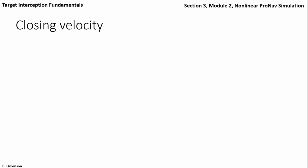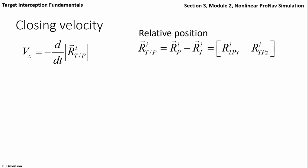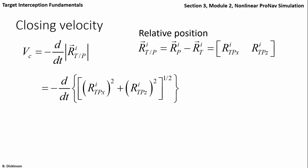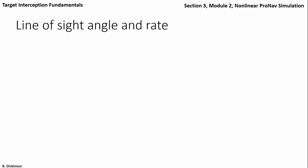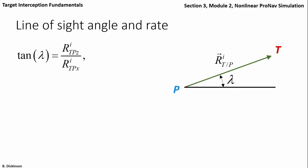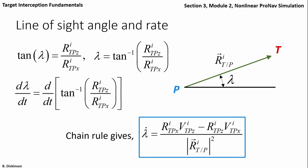From relative velocity, we can calculate closing velocity. Closing velocity is defined as minus the time rate of change of the range, where the range is the magnitude of the relative position vector with x and z components. We take the time derivative of the square root of the sum of the squares of the individual relative position components. From the chain rule, we get an expression for closing velocity that depends on the relative position and velocity vector elements. We need line-of-sight angle and line-of-sight rate. Line-of-sight angle is clearly the arctangent of the z component of the relative position over the x component. For the rate, we take the time derivative of the inverse tangent expression and, with the chain rule, get the line-of-sight rate as a function of the components of the relative position and relative velocity vectors.